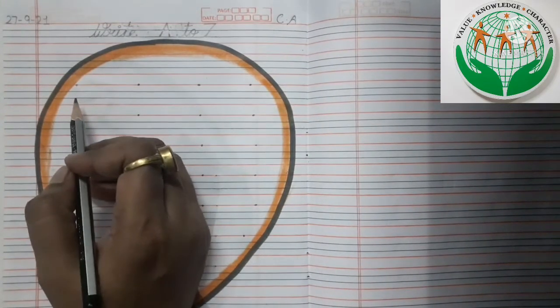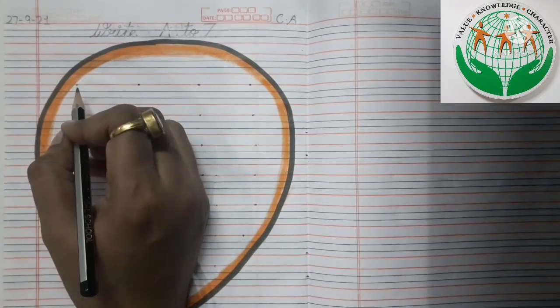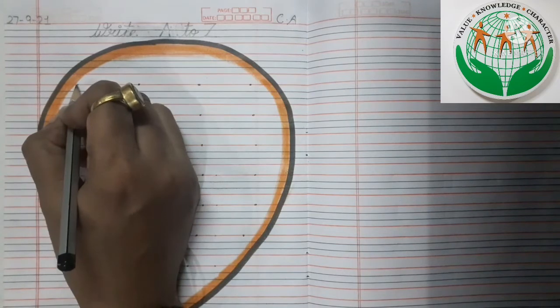So firstly, your mama will prepare your notebook like this and put the dots. Now kids, today we will write alphabets on single dot. Okay? So let's start.